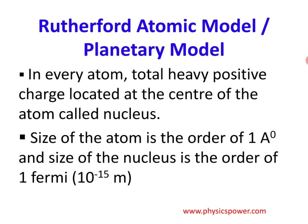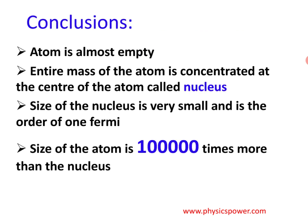Now let's discuss the conclusions drawn from this experiment. One conclusion is that most alpha particles showed very little or no deviation — they passed straight through. This tells us that the atom is almost empty.